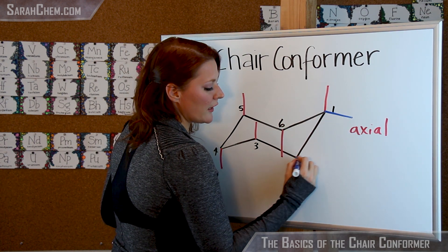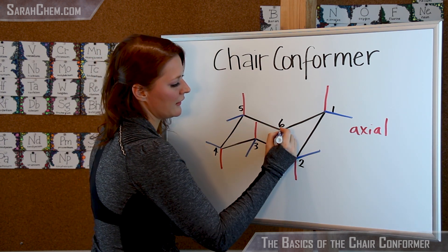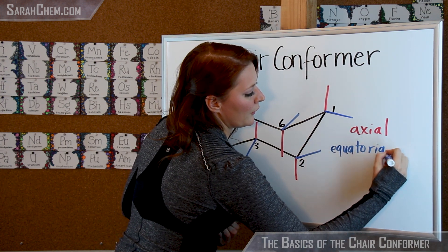Two, again alternating, up. Three, down. Four, up. Five, down. Six, up. And these ones here are our equatorial positions.